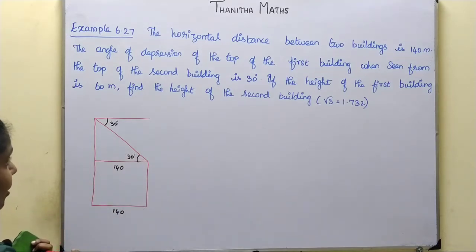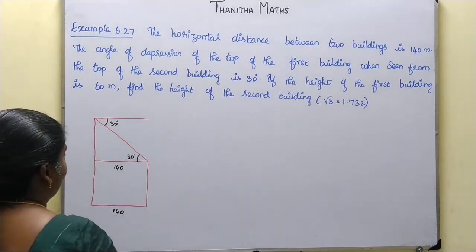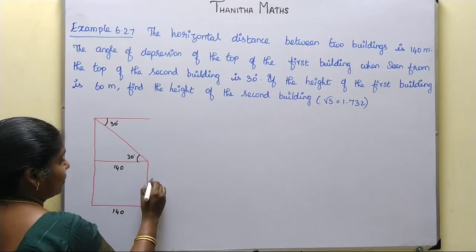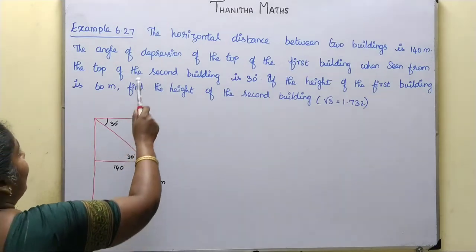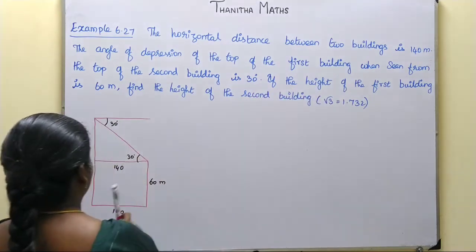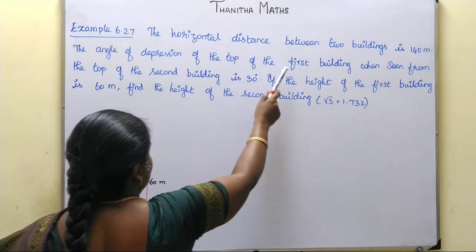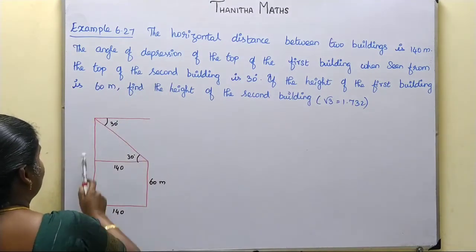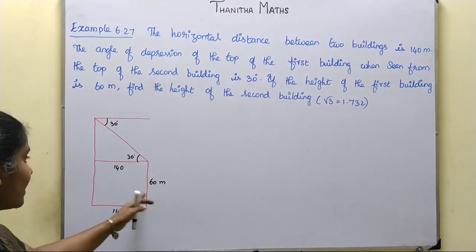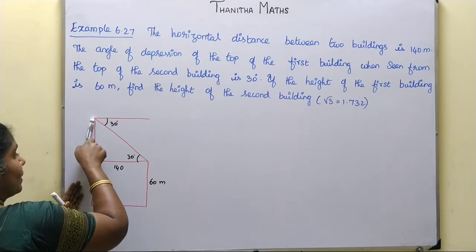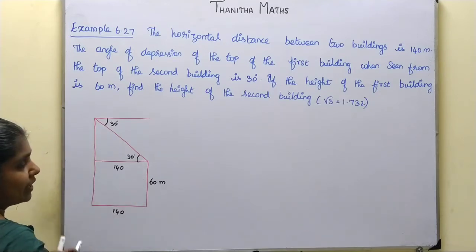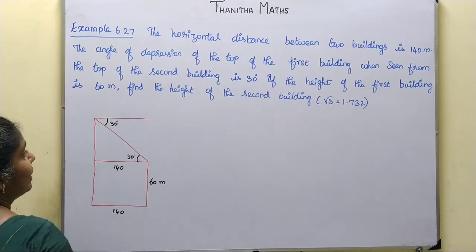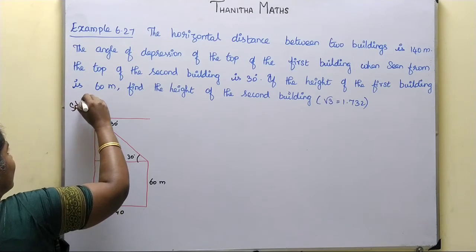The height of the first building is 60m. We need to find the height of the second building. The horizontal distance between the two buildings is 140m, and the angle of depression is 30 degrees.